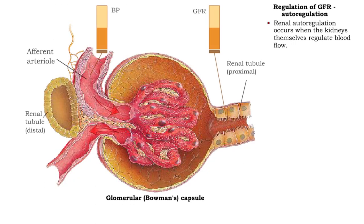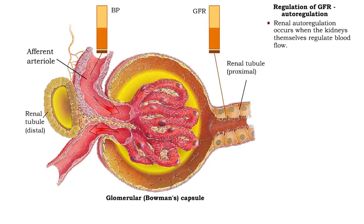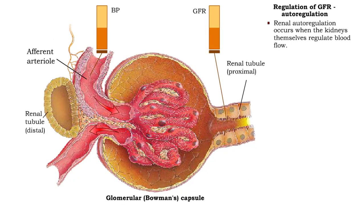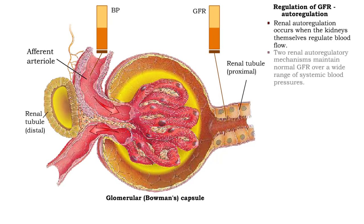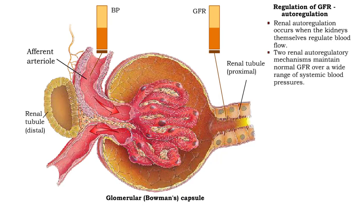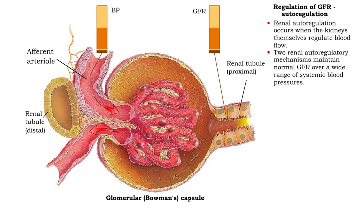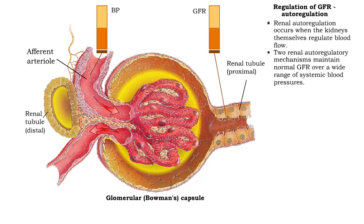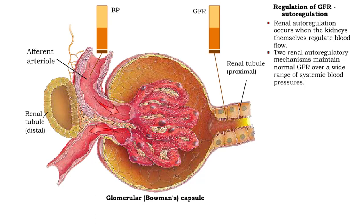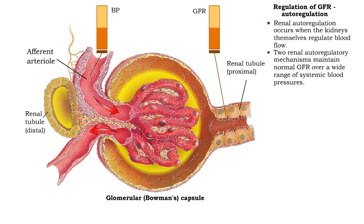Renal autoregulation occurs when the kidneys themselves regulate blood flow. There are two renal autoregulatory mechanisms that maintain a normal glomerular filtration rate over a wide range of systemic blood pressures.